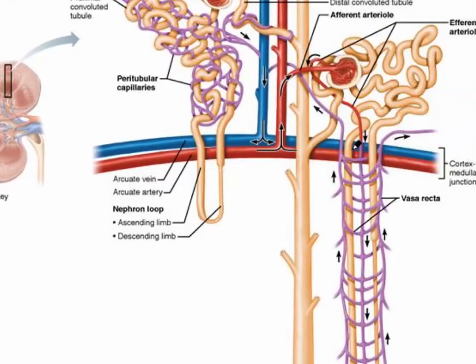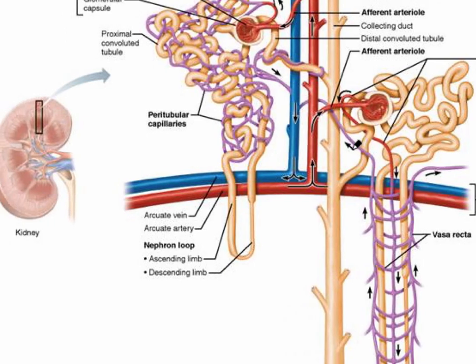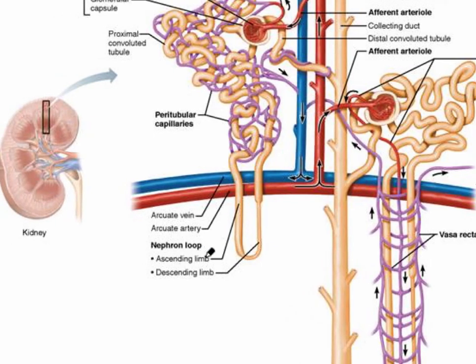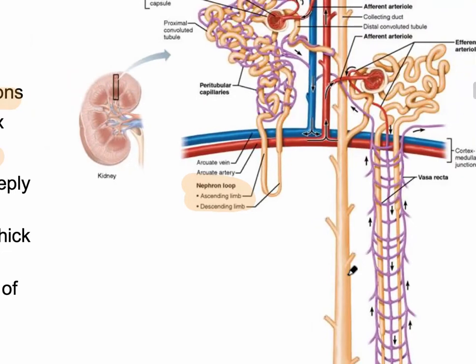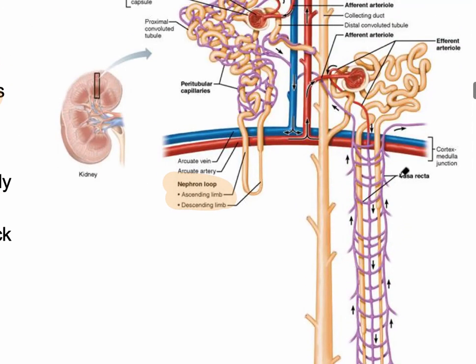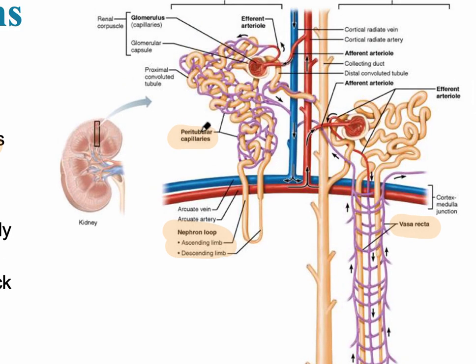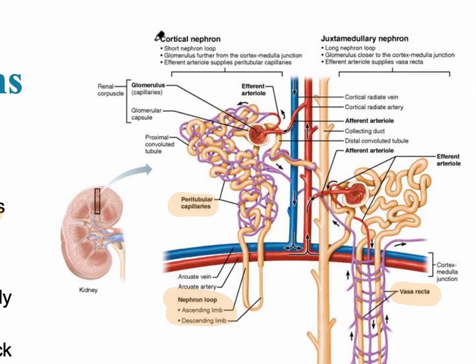Zooming in to compare the two nephron types: on the left is a cortical nephron with a very short nephron loop, while on the right is a juxtamedullary nephron with a much longer nephron loop and a specialized capillary around it called the vasa recta. Cortical nephrons are surrounded by peritubular capillaries, while juxtamedullary nephrons have the vasa recta.